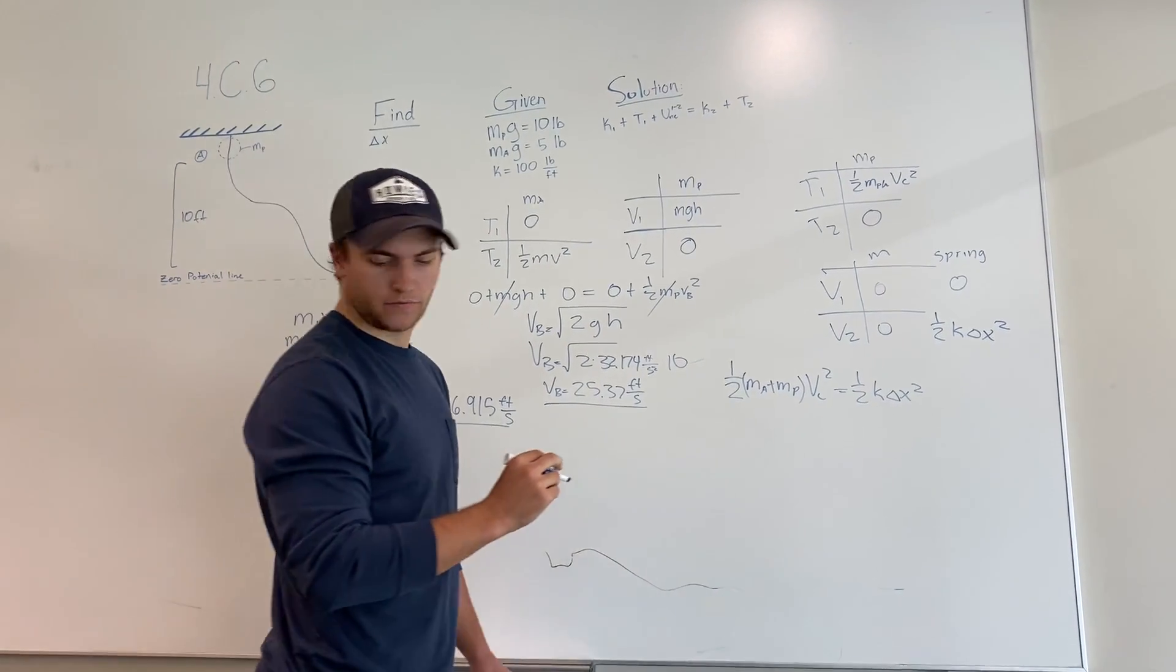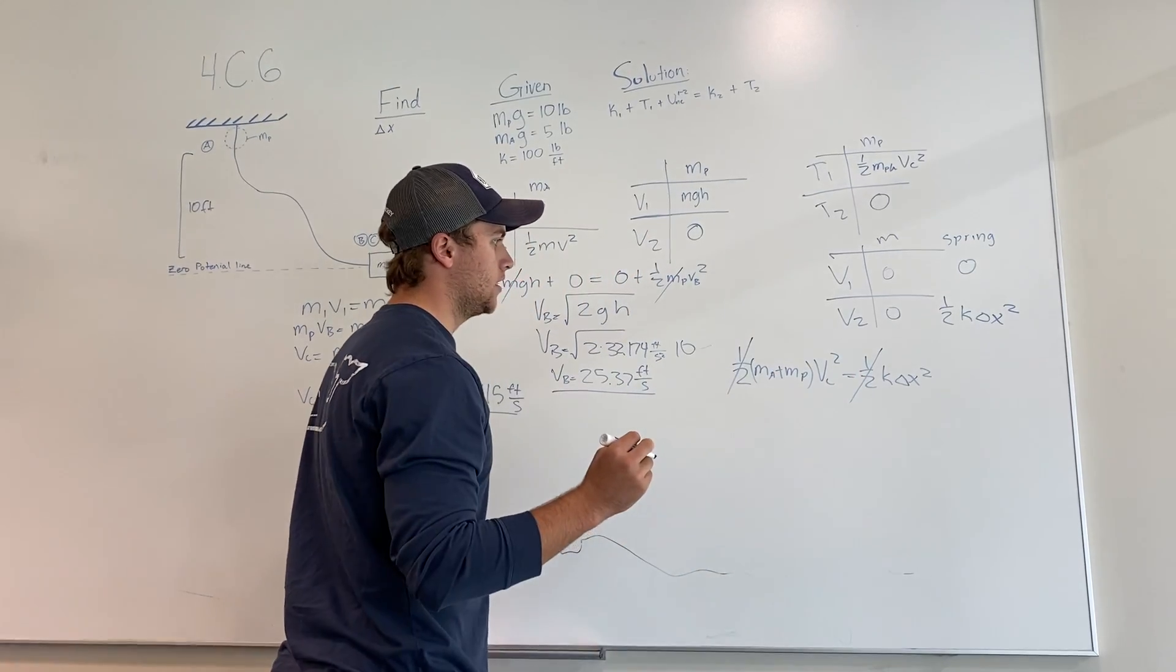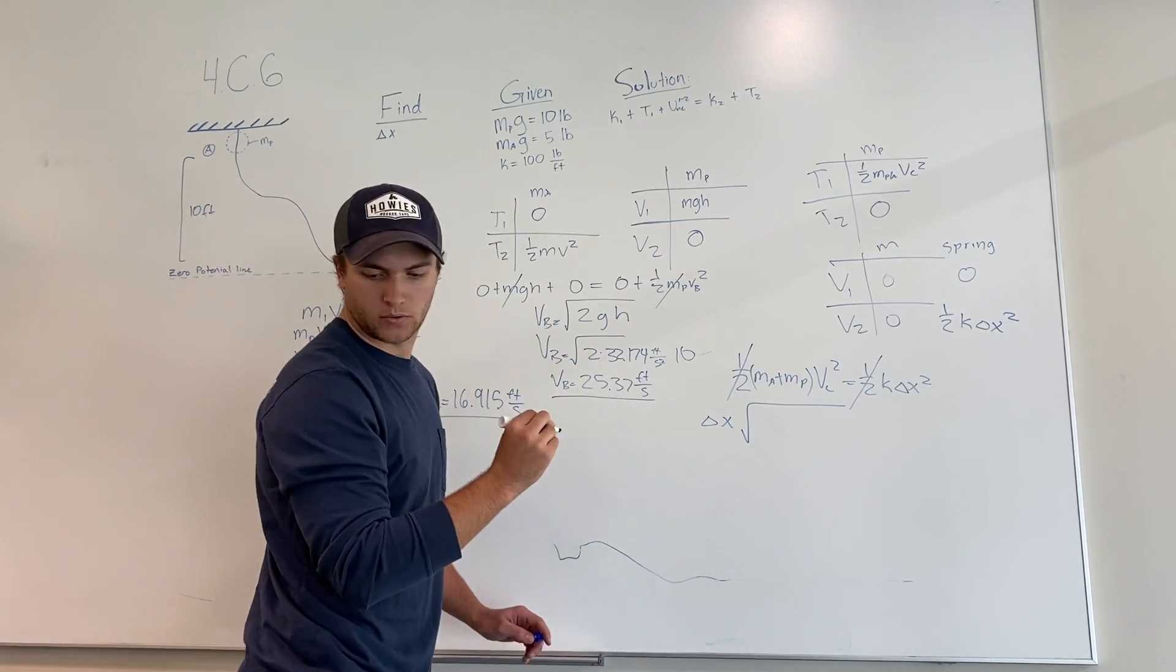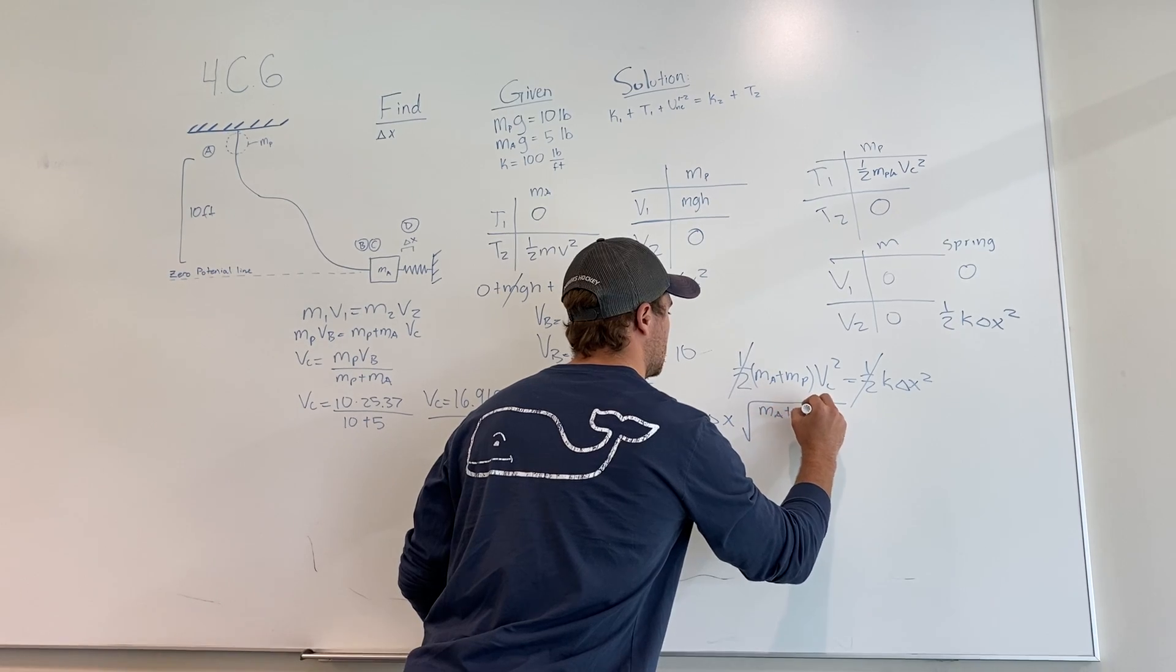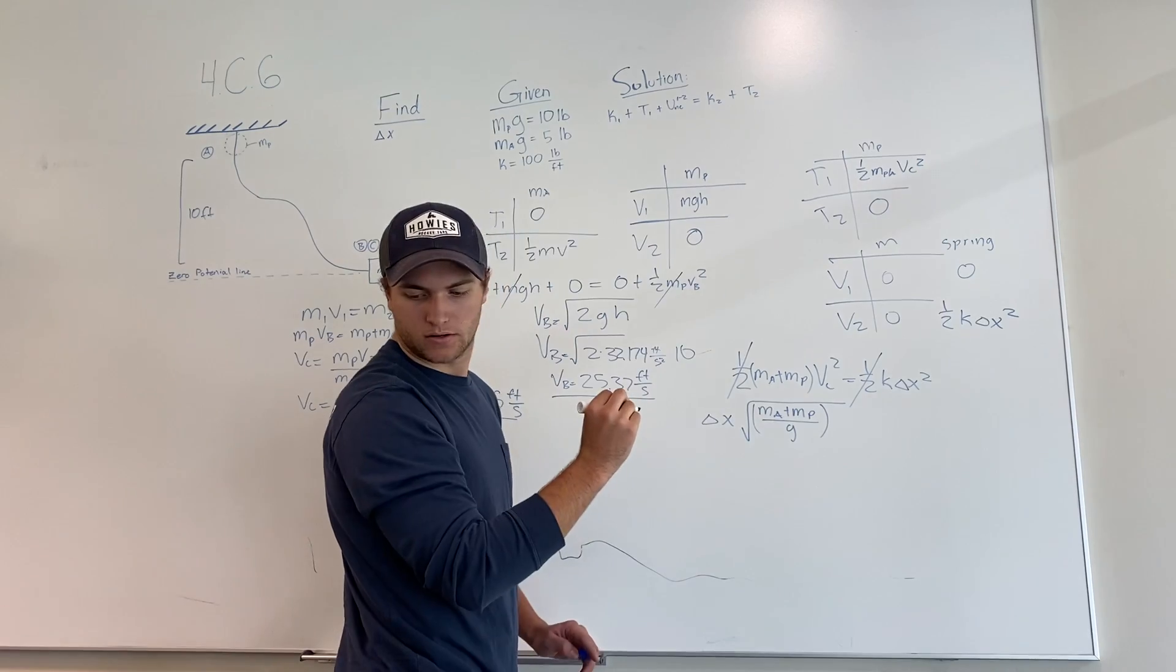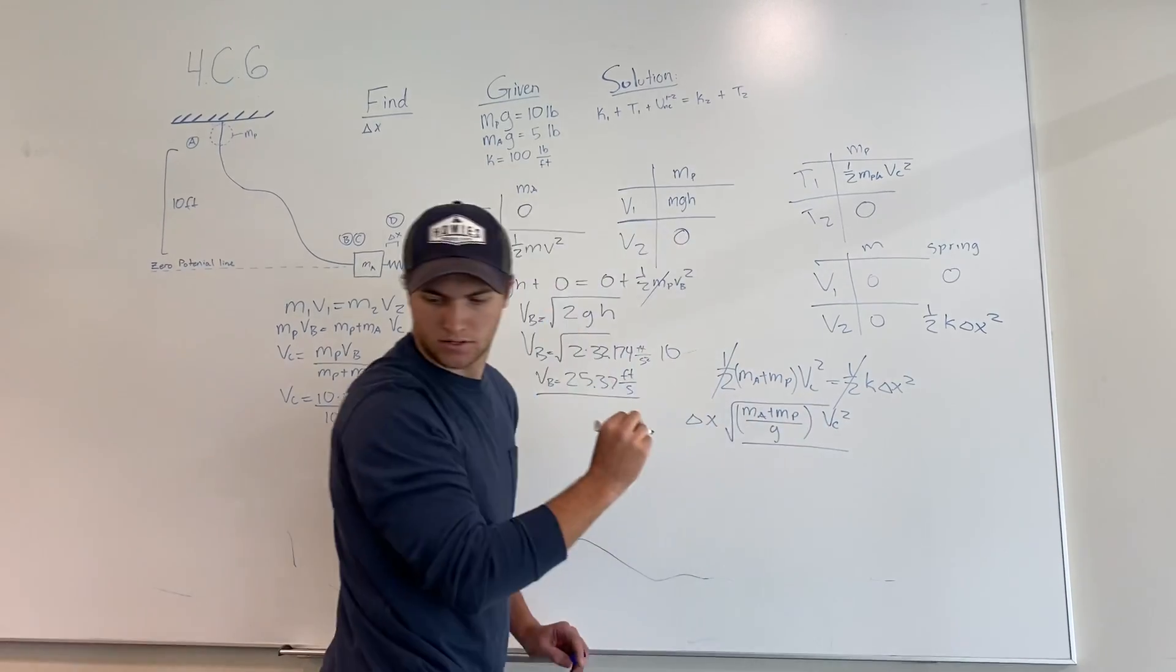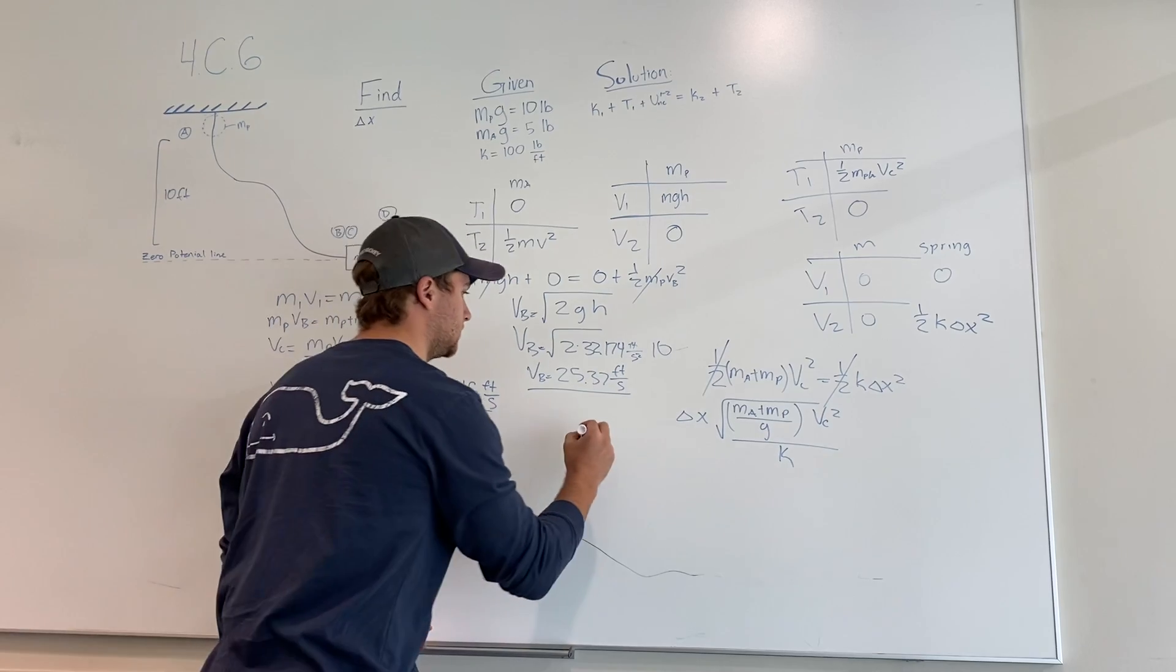And solving for delta x, you can see the one half cancel out. And solving for delta x, you're going to get symbolically square root of M A plus M P times Vc squared divided by the spring constant.